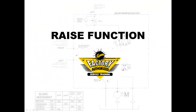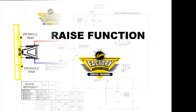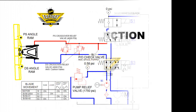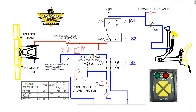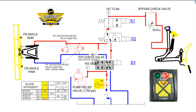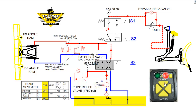We will now demonstrate the raise function. We will now turn the cab control on. The red indicator light illuminates and should remain a constant red light. We are now ready to function our plow. Pressing the raise button on the cab control activates the motor, turning the pump, drawing hydraulic fluid from the tank through the filter, creating flow.